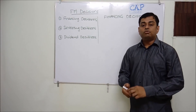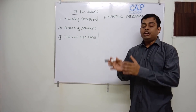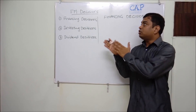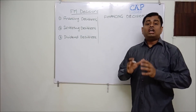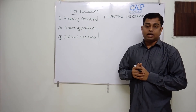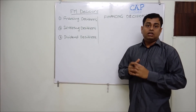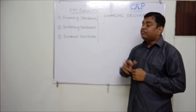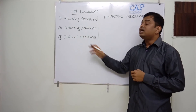Hi friends, good morning all. Welcome back to CAP classes. In continuation of the previous video, today we are going to discuss in financial management what are the key decisions the finance manager or the CFO of the company has to take. There are three major decisions in financial management: one, financing decisions; two, investing decisions; three, dividend decisions.